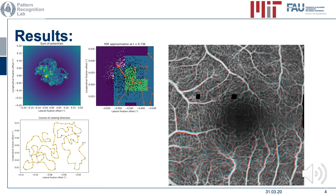To the upper left we can see the summed potentials after one run. To the right of this we can see a visualization of the random weighted selection, showing the potential sum, next possible candidates as black circles, and the path shown in red.